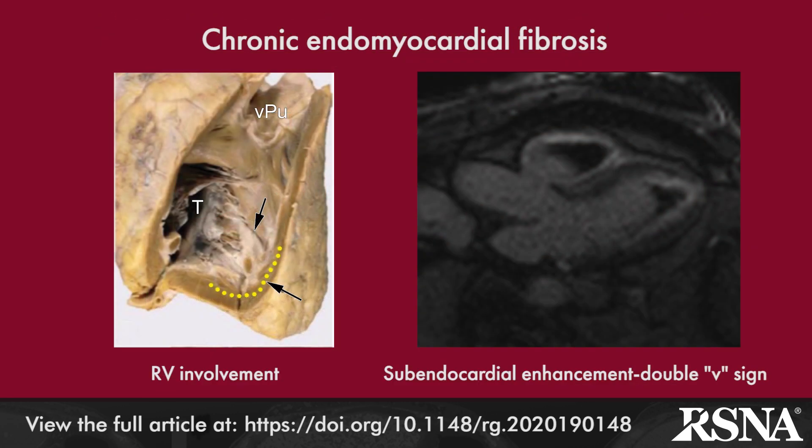Pathologically, there is endocardial fibrosis affecting the ventricular inflow tract and apices that spares the outflow tracts, with small V-shaped ventricles and dilated atria. The left ventricle is affected in approximately half of patients, with the remainder showing right ventricular or biventricular involvement.